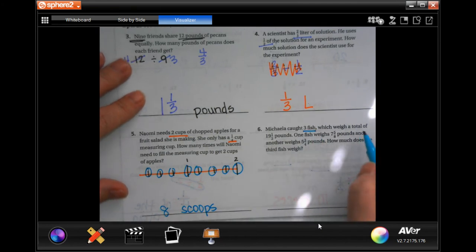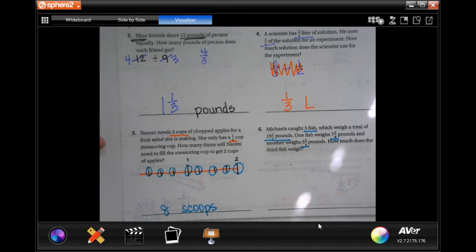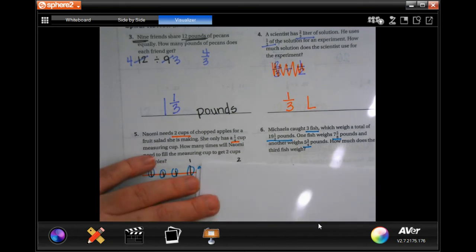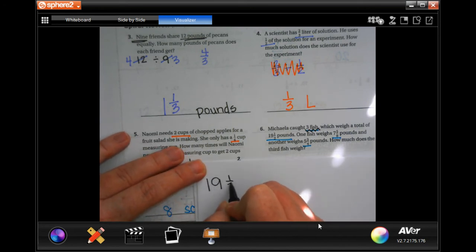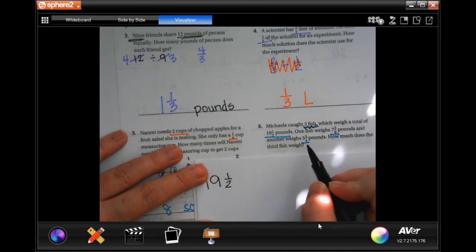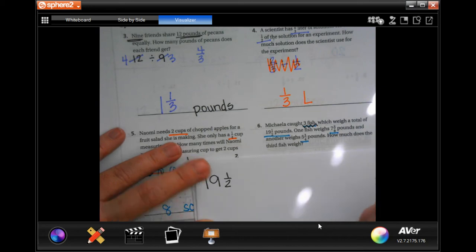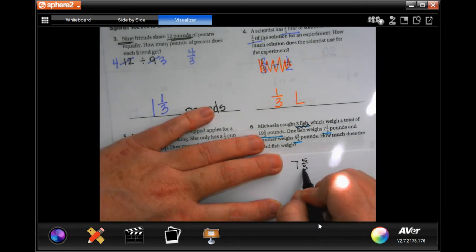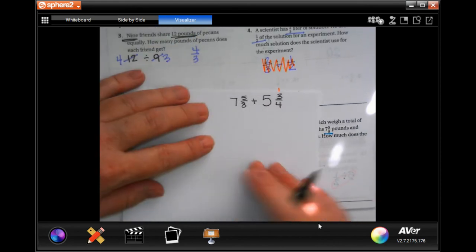Michaela bought 3 fish, which weigh a total of 19 and a half pounds. One fish weighs 7 and 5/8 pounds, and another weighs 5 and 3 quarters pounds. How much does the third fish weigh? All right. Let's do it. So, we have 19 and a half. We are taking away these two because we need to know how much that last fish weighs and whatever is left over is going to be that amount. So, first, I want to find out how much these two are together.